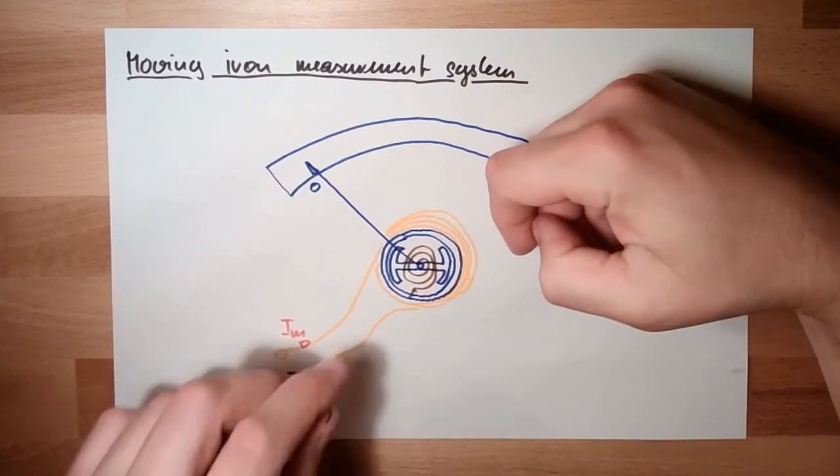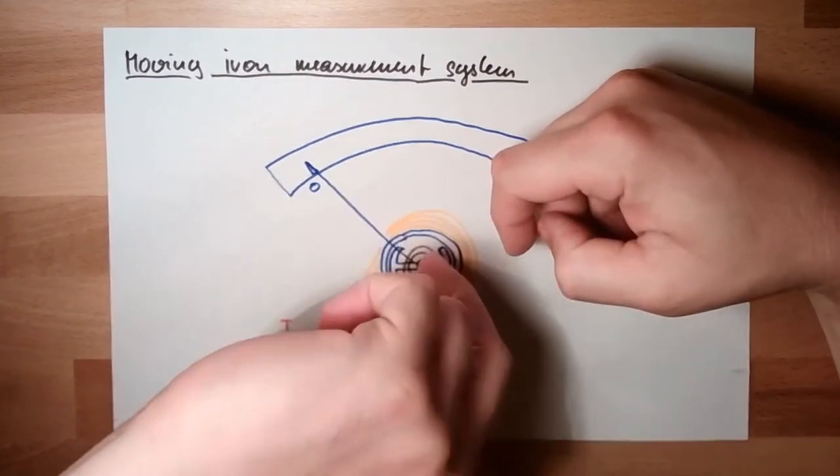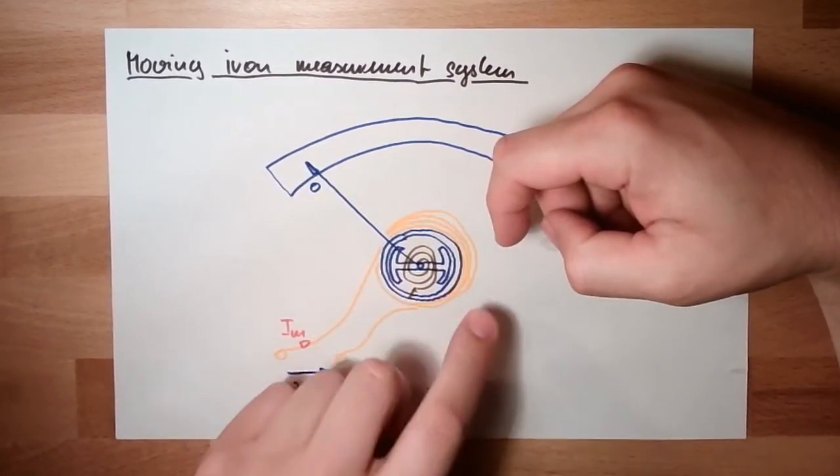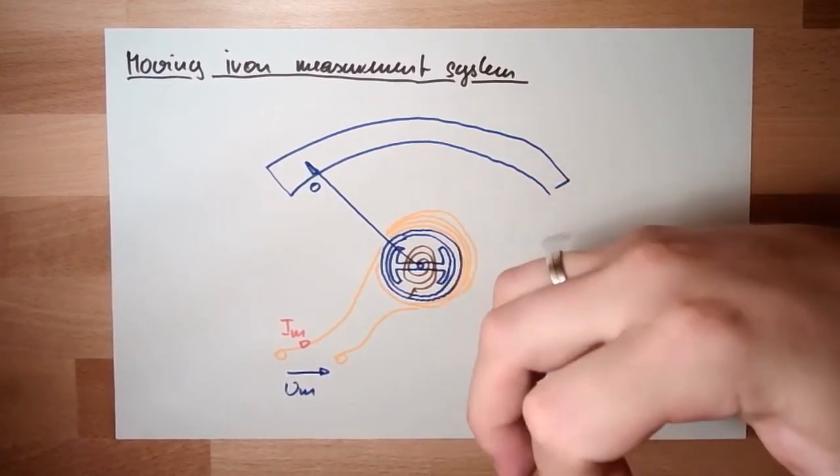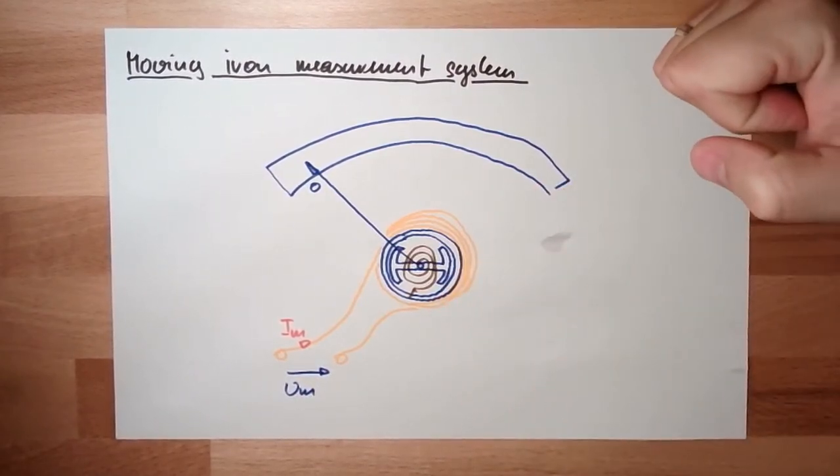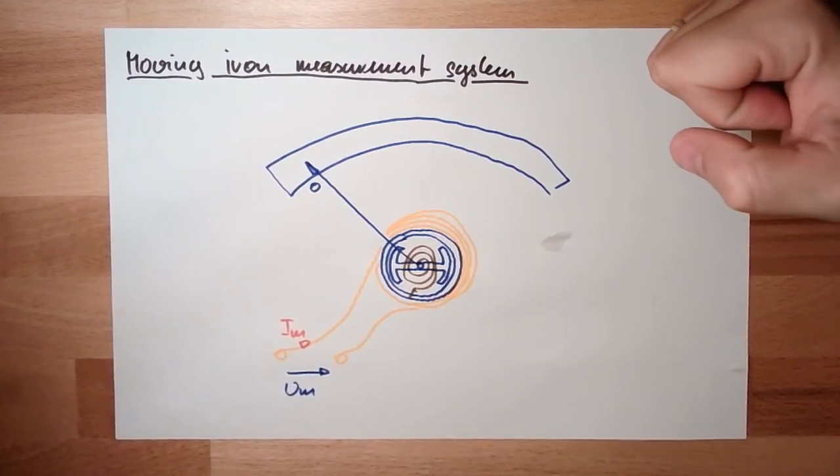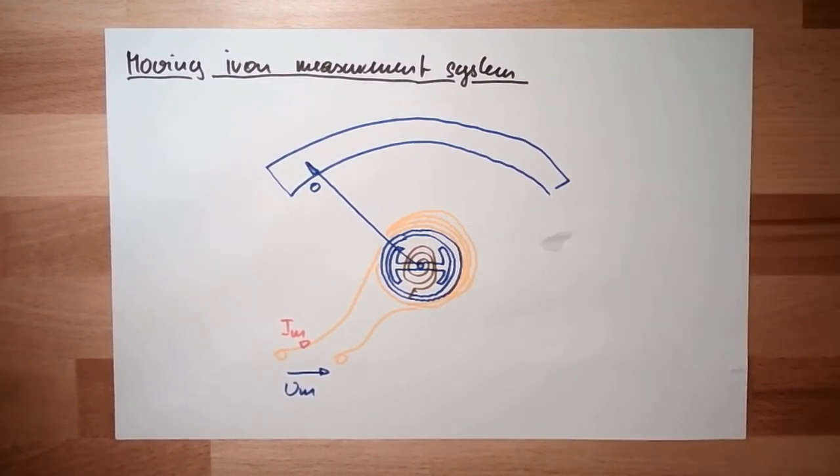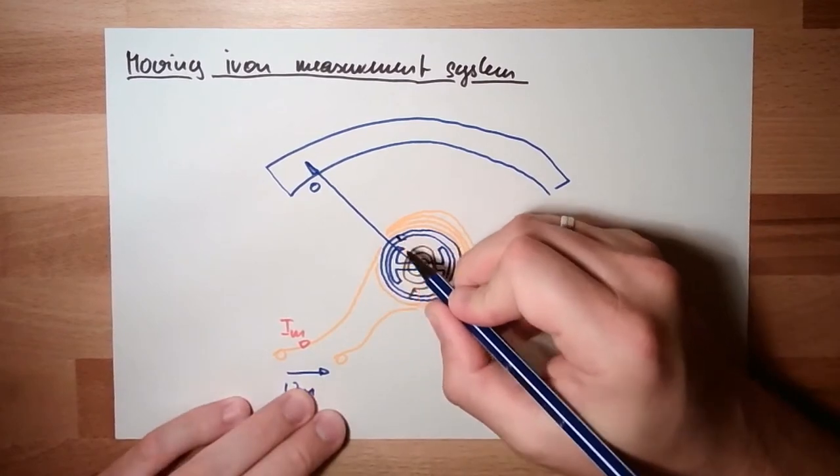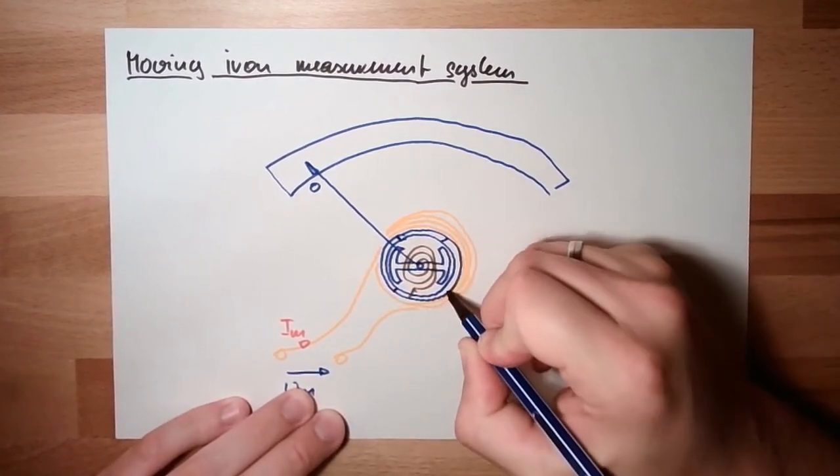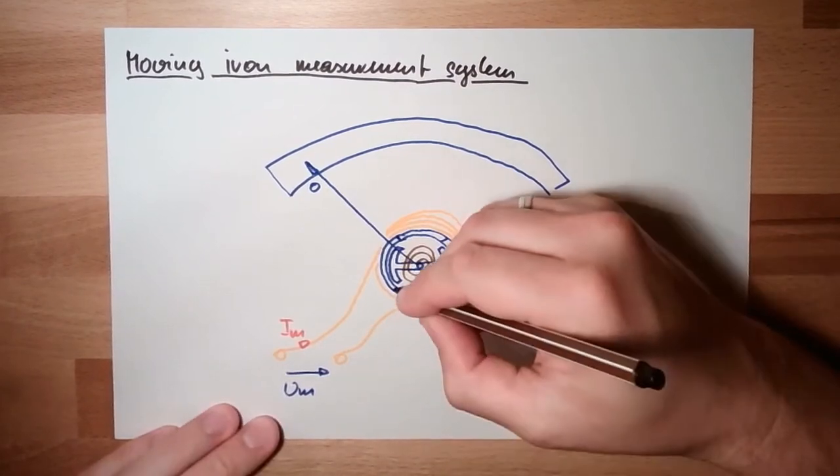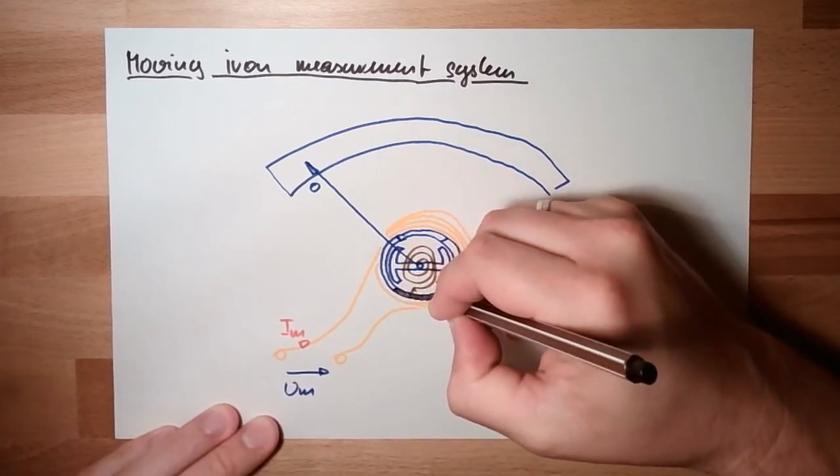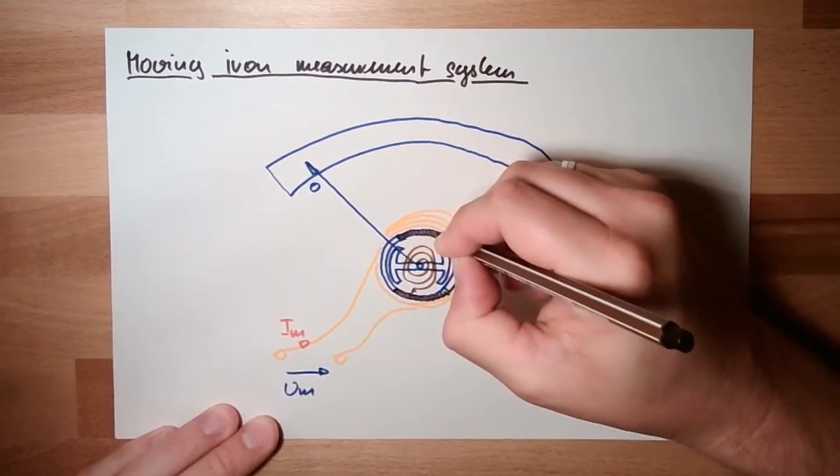And this means the standstill part and the moving part are magnetized in a similar way. Here this is the standstill part. In between here, there is no iron, this is not ferromagnetic material.